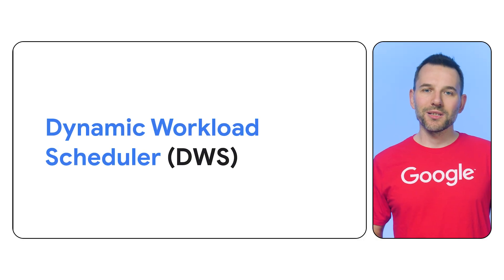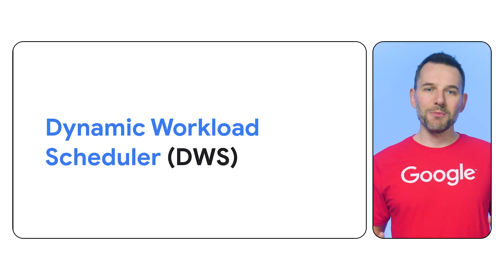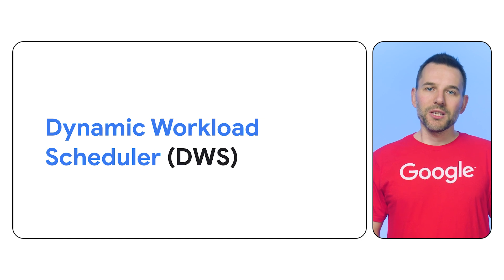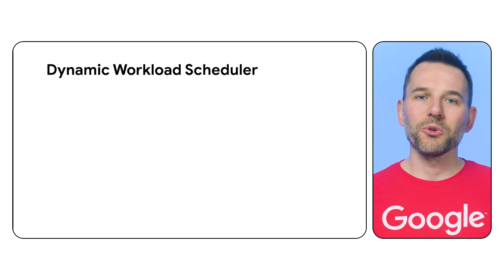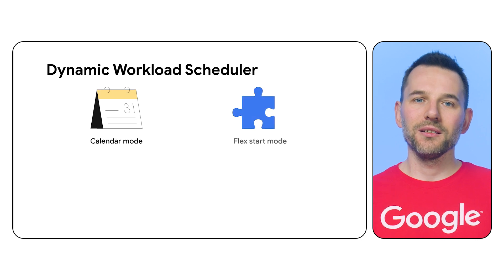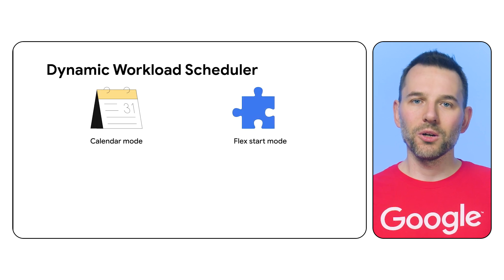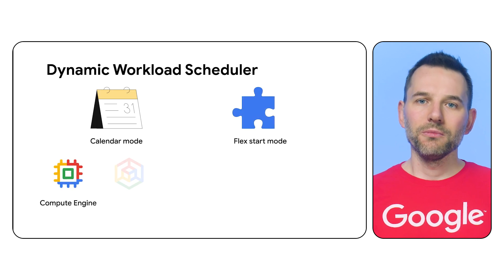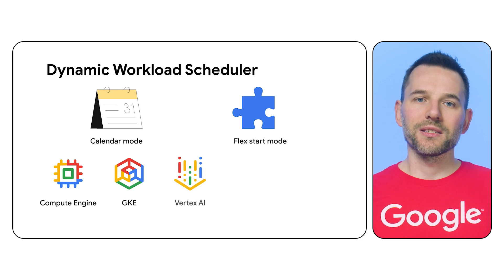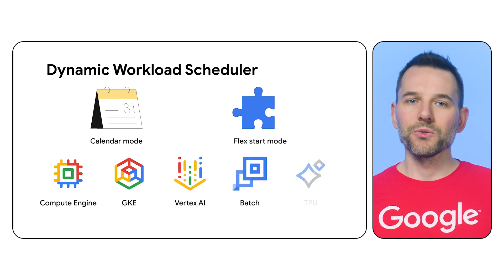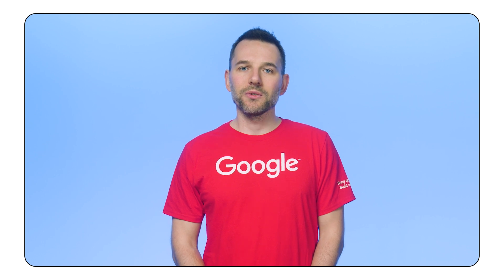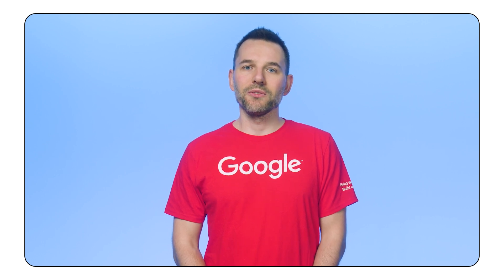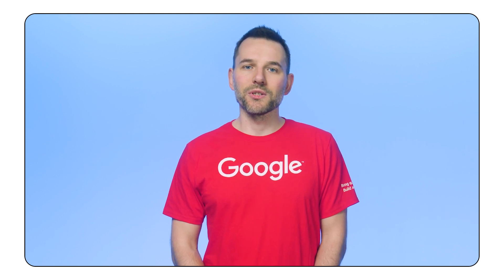To solve this problem, Google Cloud has introduced Dynamic Workload Scheduler, or DWS for short — a job scheduling platform designed for AI workloads. With its two modes of operation, Calendar and FlexStart, it integrates with a set of Google Cloud products like Compute Engine, Kubernetes Engine, Vertex AI, Batch, and TPUs. In this video, I will explain how DWS integrates with those products and how to leverage its power to make hardware acquisition simpler.